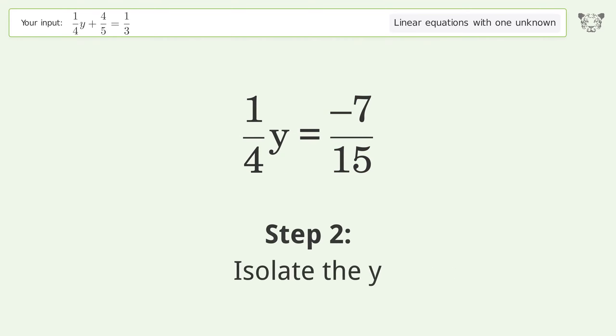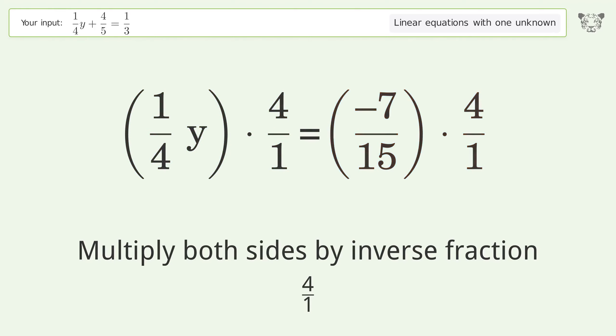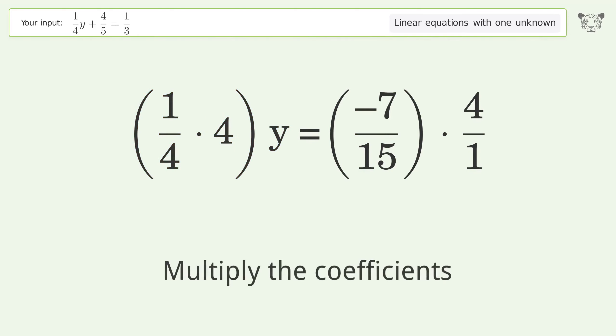Isolate the y. Multiply both sides by the inverse fraction 4 over 1. Group like terms. Multiply the coefficients.